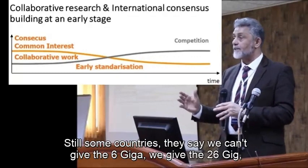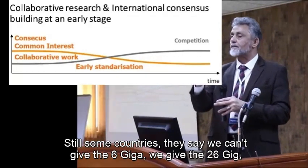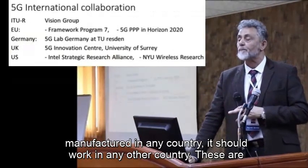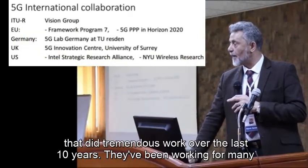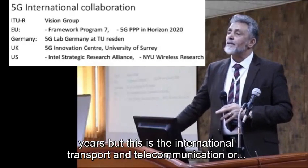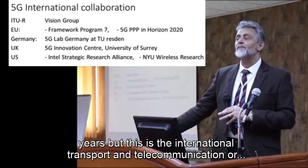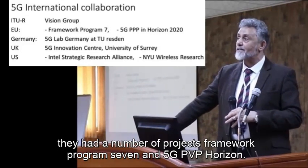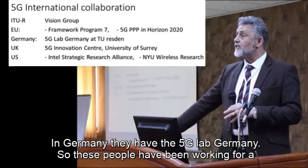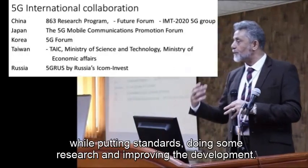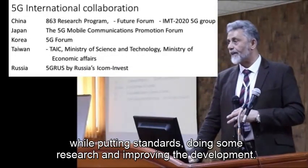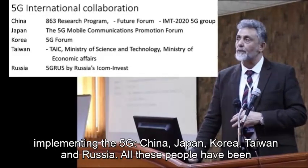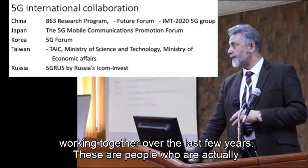There are still some differences — some countries allocate 6 GHz bands, others 26 GHz or 3 GHz — but they are reasonably close enough that a mobile phone manufactured in any country should work in any other. The countries that have been actively working on and implementing 5G include China, Japan, Korea, Taiwan, and Russia, all collaborating over the last few years.